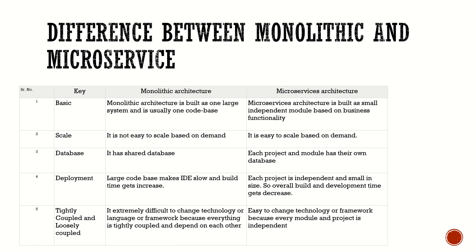Coming to the fifth point, which is tightly coupled versus loosely coupled: monolithic architecture is tightly coupled and does not allow us to introduce new technologies. But this is not the case for microservice architecture because it is loosely coupled. We can involve different types of technology stacks.